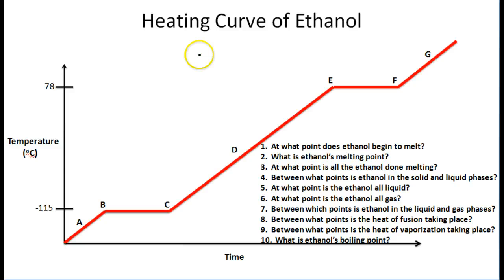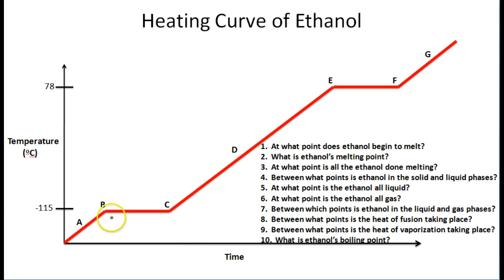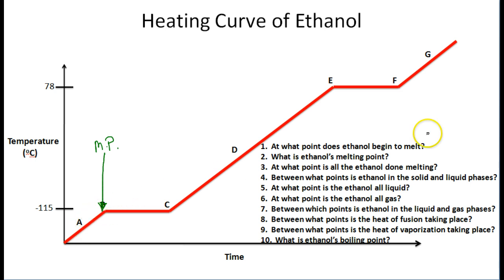In this example we have a heating curve of ethanol. Ethanol is starting off in the solid stage and ends as a gas. Question one: at what point does ethanol begin to melt? If you take a look at this heating curve, the ethanol is going to begin to melt right here at point B. As this solid ethanol continues to heat up, it starts to melt at point B — that is ethanol's melting point.